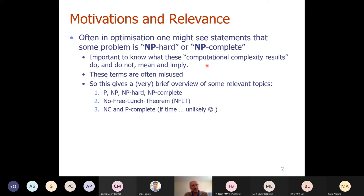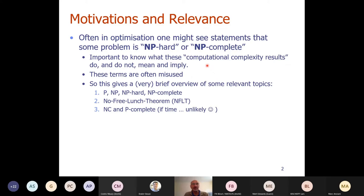People often use the wrong meaning for these terms. Then there's some discussion of something called the no free lunch theorem, which is also often misused — we see that quite a bit in papers and dissertations. The third part, if there's time, is about parallel worlds. With ever more cores and multi-core machines, parallel becomes ever more important, and there are complexity results relevant to that.